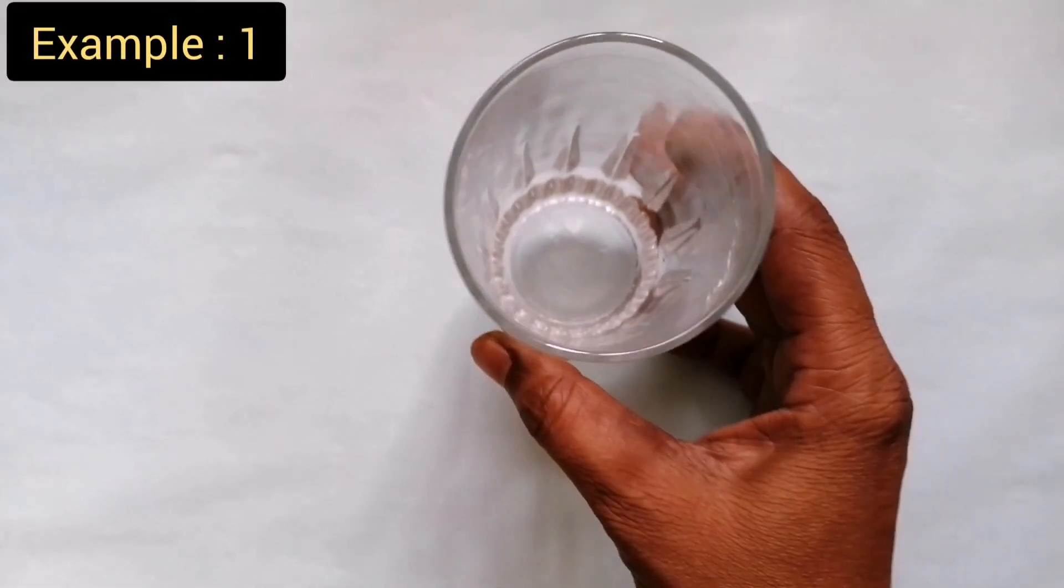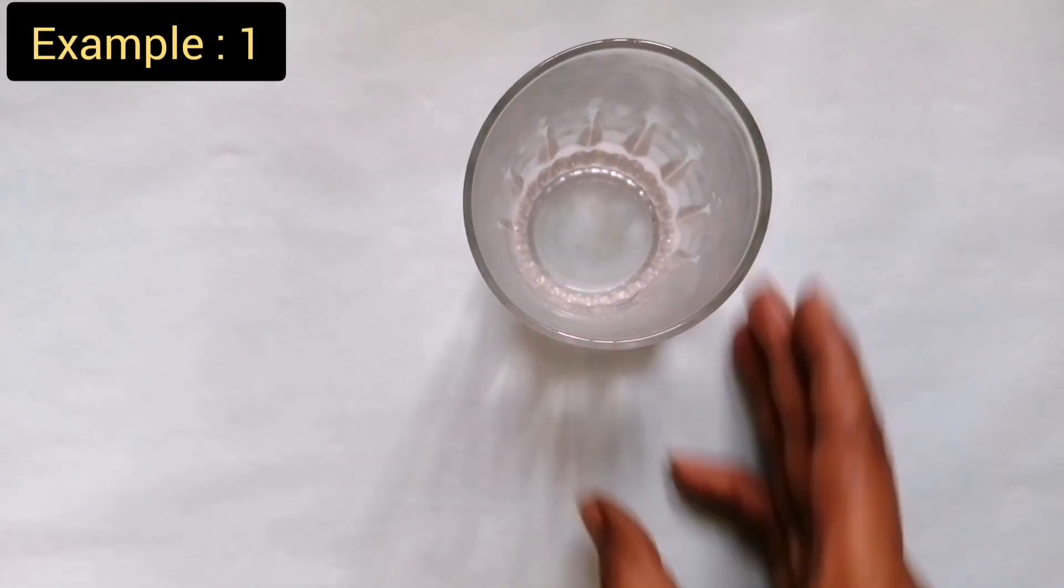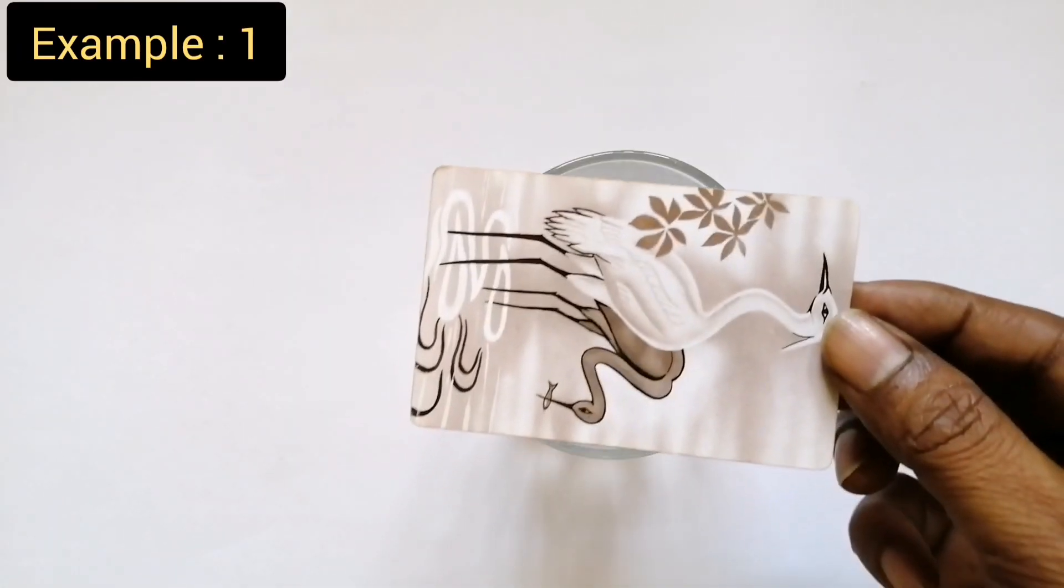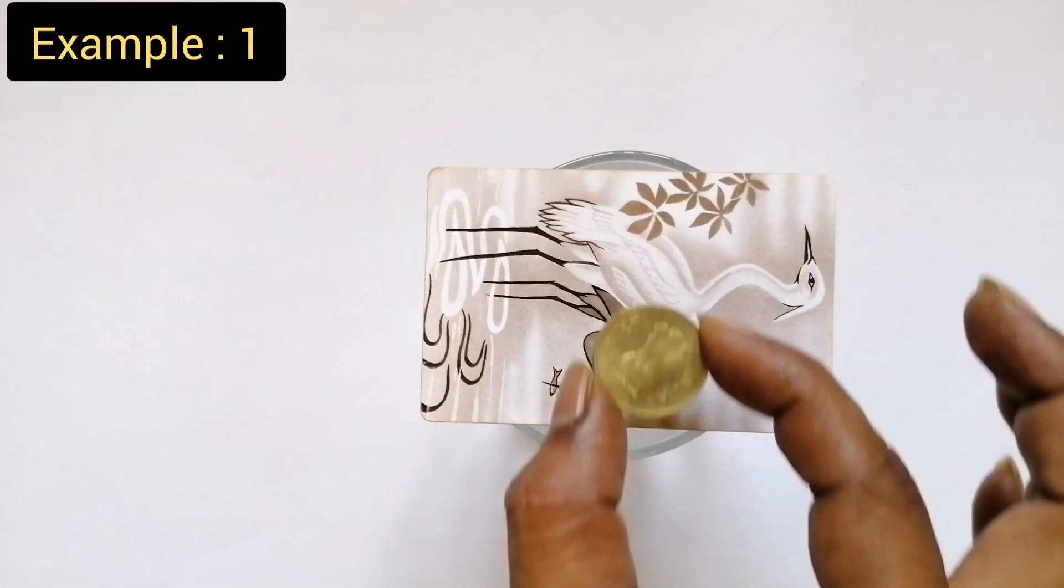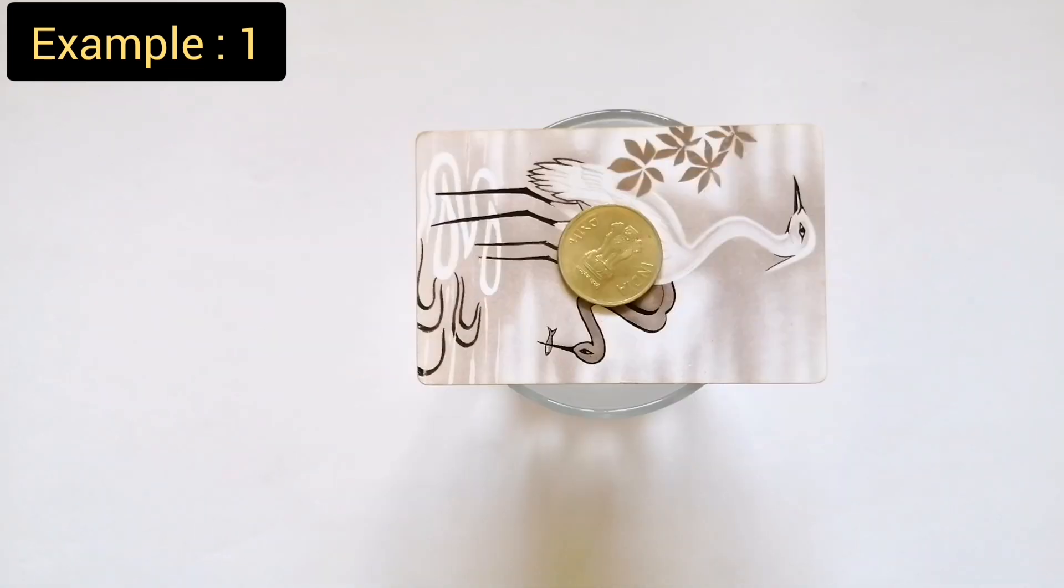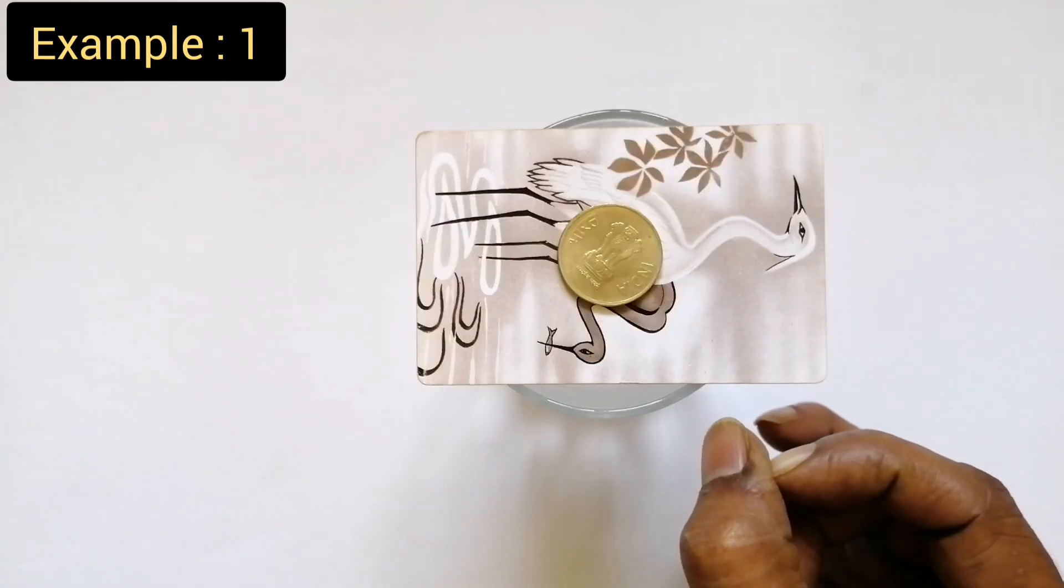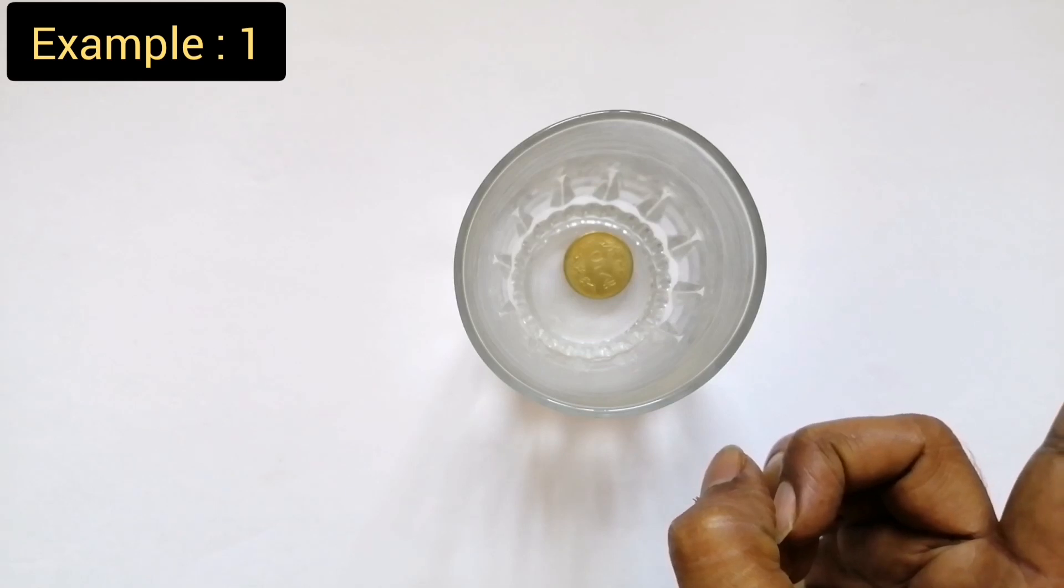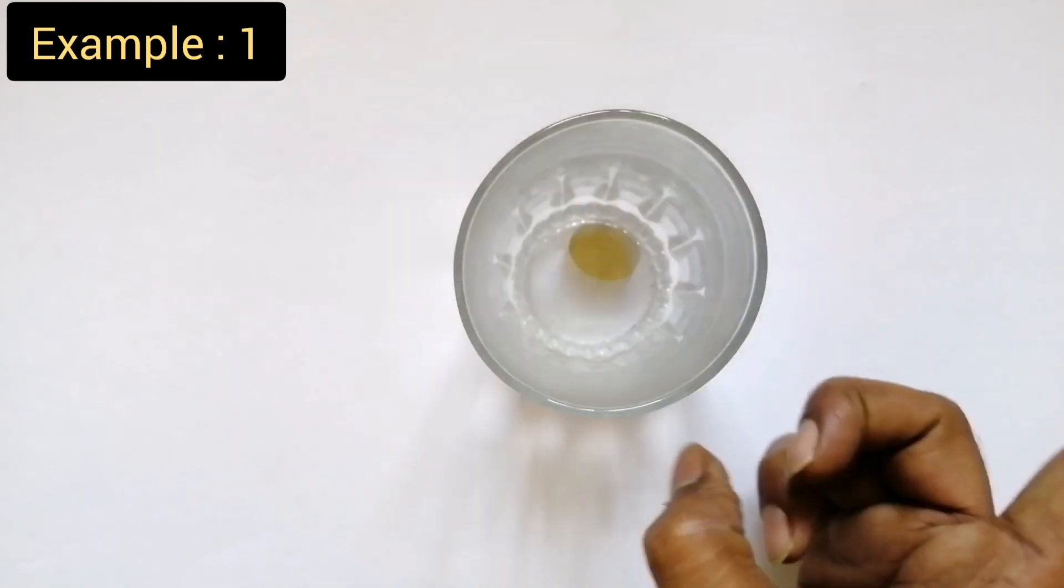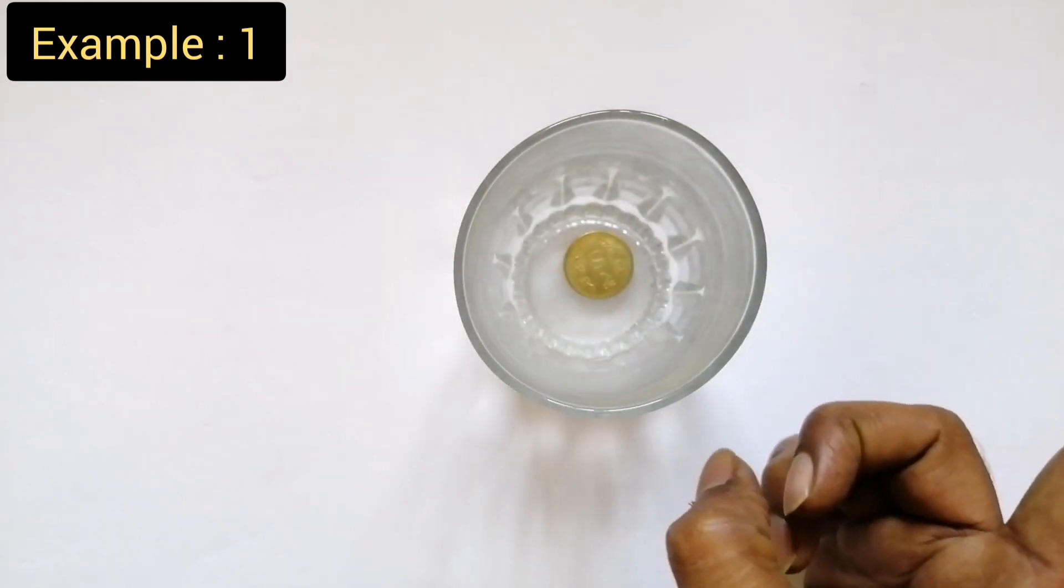When the cardboard is flicked, the coin falls into the glass. This is because the inertia of the coin maintains its state at rest and it falls into the glass due to gravity.